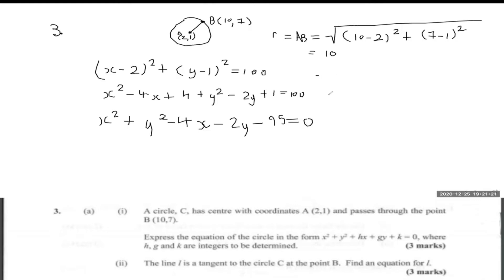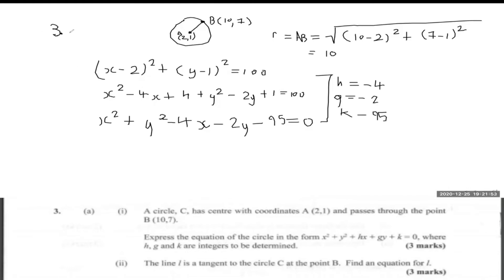Now we can identify the coefficients. g is the coefficient of x, so g equals negative 4. k - or rather g - is the coefficient of y, so g equals negative 2. And k is the constant, so k equals negative 95. Nice and easy - that's the first part of the question, part (i).